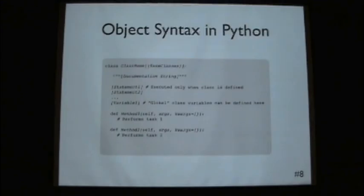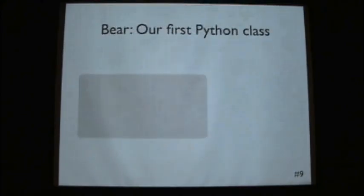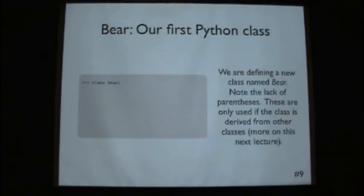Of course these methods should also have doc strings. But, you know, they don't in this example. Okay, so let's see how we make a class called bear in Python. It's as easy as saying class bear. Note that we do not need parentheses, but these are useful when a class is derived from other classes. And in the next lecture Josh will talk, will give a little more details about how that works.